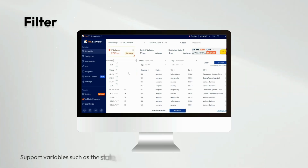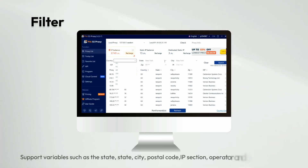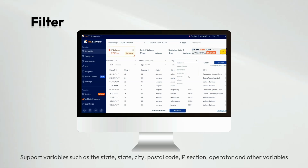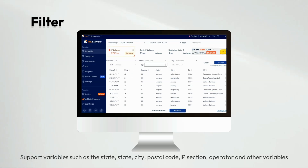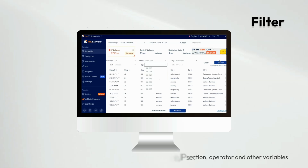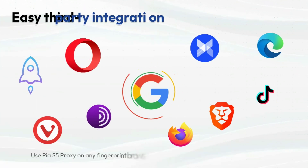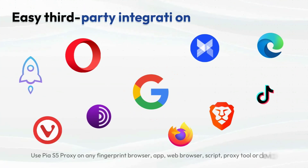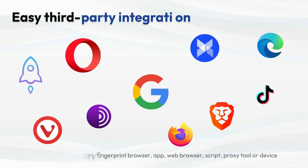PiAs5Proxy supports variables such as state, city, postal code, IP section, operator, and other variables. You can use PiAs5Proxy on any fingerprint browser, app, web browser, script, proxy tool, or device.